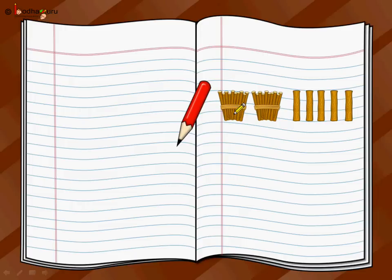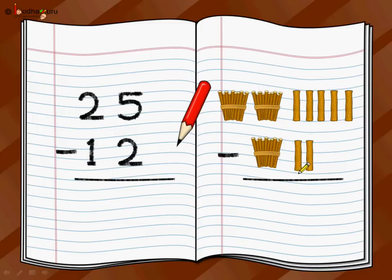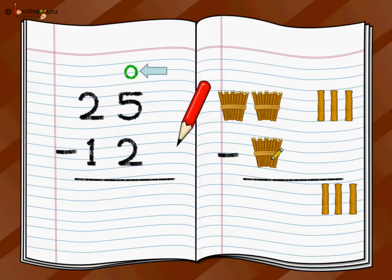Let us take another example. You have twenty-five sticks, and of that you want to remove twelve sticks. So how do you do it? You start from the loose sticks. You have five loose sticks from which you want to remove two sticks. Five minus two — you remove those two sticks and you are left with only three sticks. Same way on the numeric side: five minus two is equal to three.